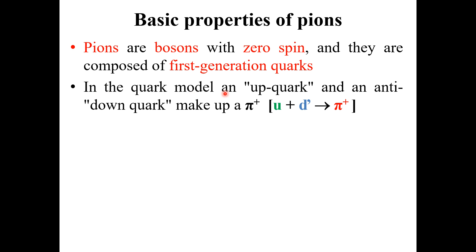In the quark model, an up quark and an anti-down quark make up a pi positive. We can write it in the form of an equation: up quark plus anti-down quark leads to pi positive. Similarly, a down quark and an anti-up quark make up the pi negative. Down quark plus anti-up quark leads to pi negative.